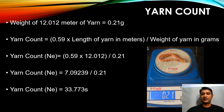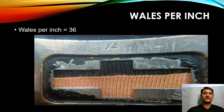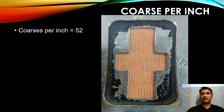The third parameter is wales per inch. Using a magnifying glass, we count the number of wales present in one inch. In this fabric, I got 36 wales per inch. This reading needs to be repeated at least 10 times at different places, and the average is taken as the wales per inch of the fabric.